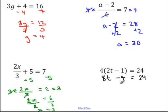Then I'll add 4 to both sides. That leaves me with 8t equals 28.